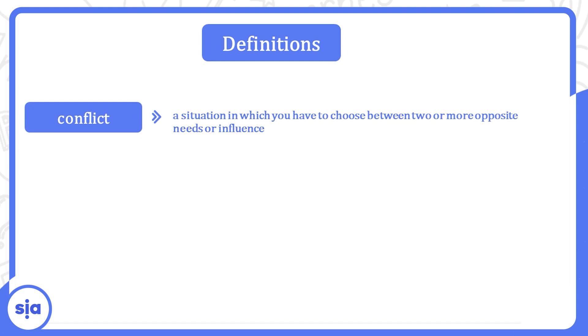Conflict معناها صراع. A situation in which you have to choose between two or more opposite needs or influence. لما تكون في صراع ما بين أن أنت تختار ما بين حكتين أو حكتين أنت عايزهم أو حكتين مأثرين عليك. The rising conflict between the two of them made it impossible for them to work together. خلى الموضوع ده مستحيل أن هما يشتغلوا مع بعض.